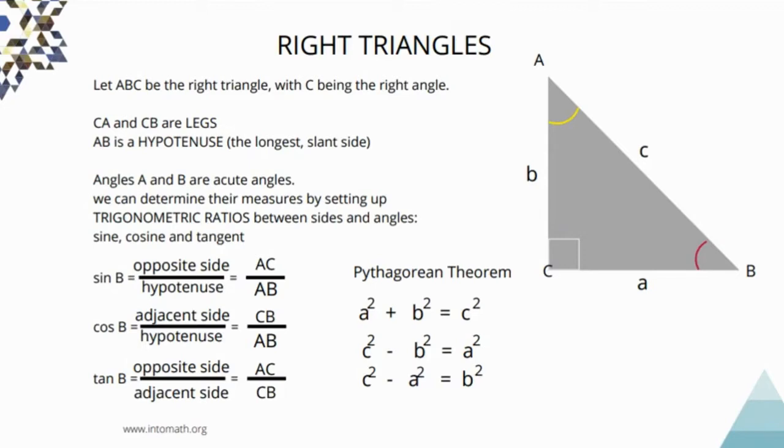For sine of the angle, you have to take the opposite side and divide it by the hypotenuse. The hypotenuse, remember, is the longest side of the right angle triangle. Cosine of the angle is the adjacent side over the hypotenuse and tangent of the angle is opposite side over the adjacent.